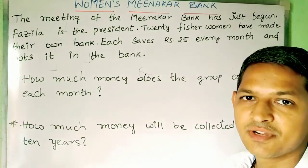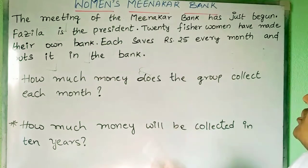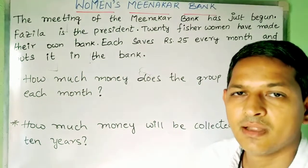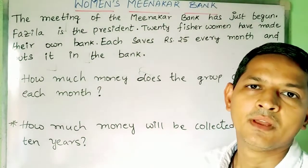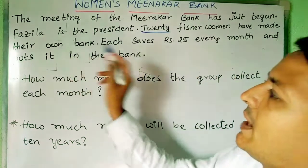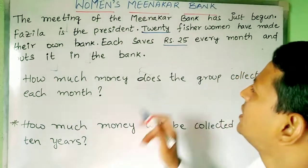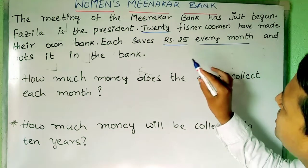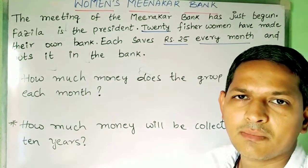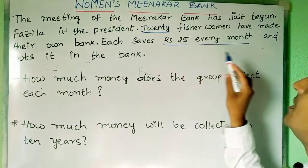Hi children. In this video we will try to understand about the women's Meenakar Bank. The meeting of the Meenakar Bank has just begun. Fazila is the president. Twenty fisherwomen have made their own bank, collecting deposits together. Each member saves ₹25 every month and puts it in the bank. When money is collected and kept in one place, that is called a bank.